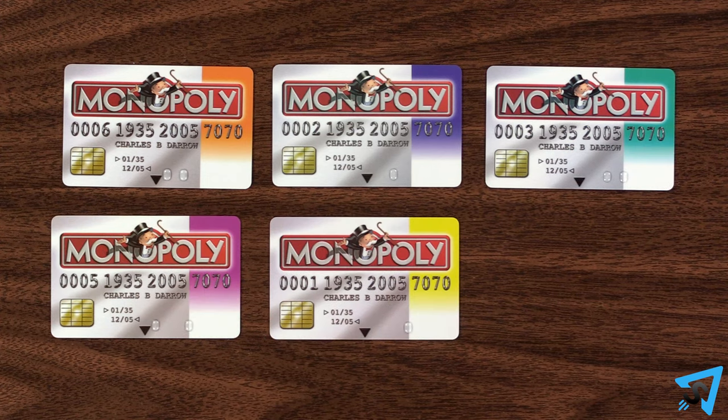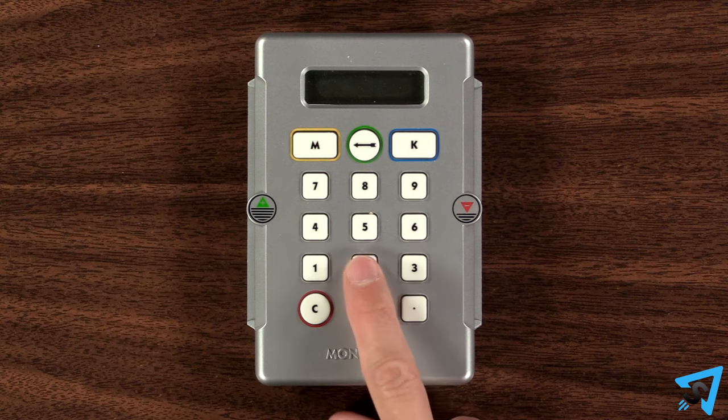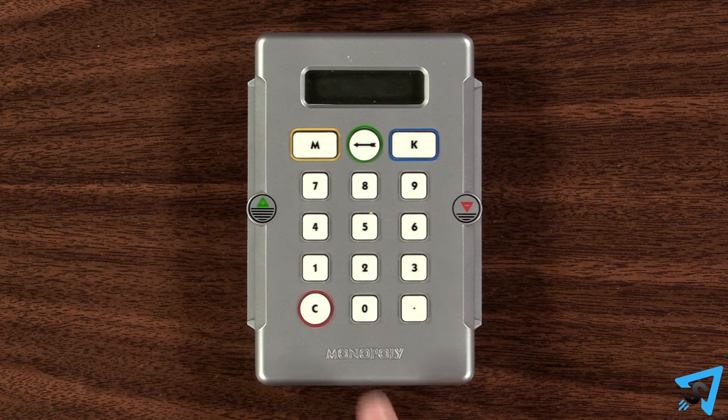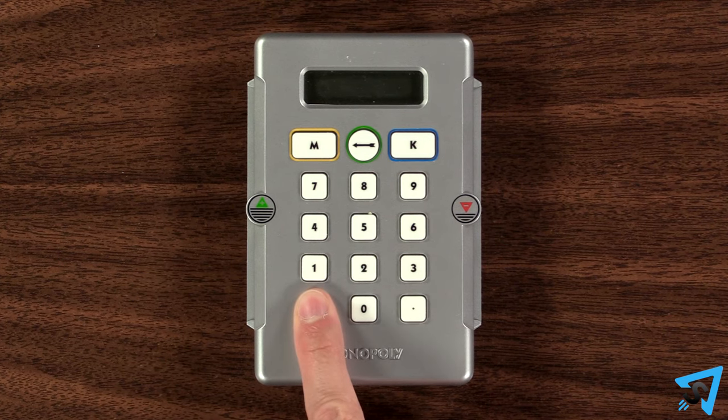All money is digital and each player takes a bank card. Press any button on the game unit to turn it on. Hold the C button to clear the balances from the previous game.